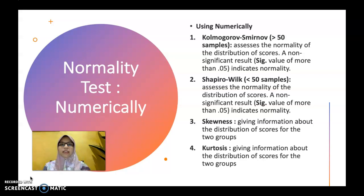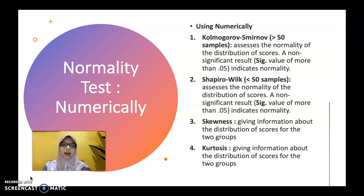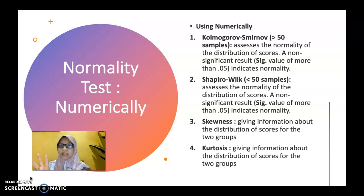When you want to find the normality of your data numerically, there are four ways. First, you can use Kolmogorov-Smirnov. Secondly, you can use Shapiro-Wilk. Thirdly, you can use skewness. And finally, the fourth one, you can use kurtosis.